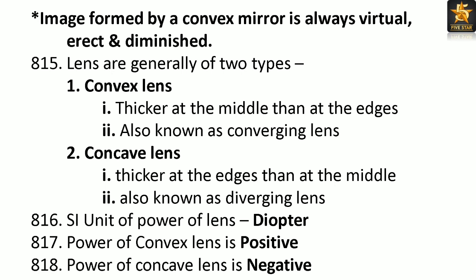Lenses are of two types: Convex lens — thicker at the middle than at the edges, also known as converging lens. Concave lens — thicker at the edges than at the middle, also known as diverging lens. SI unit of power of lens: Diopter. Power of a convex lens is positive. Power of a concave lens is negative.